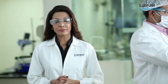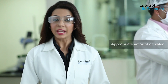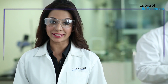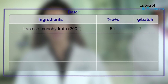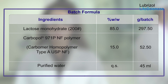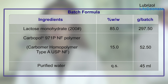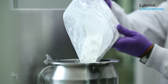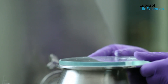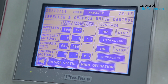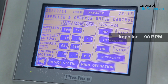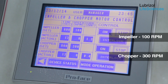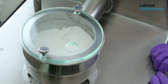In the first example, we will demonstrate an appropriate amount of water addition. The formulation comprises 85% lactose and 15% Carbopol 971P NF polymer. The amount of water used represents 13% of the dry blend, which is an appropriate amount for this formulation. Lactose and Carbopol 971P NF polymer are passed through a 40-mesh screen and loaded into the high shear mixer. The impeller is set at 100 rpm and the chopper at 300 rpm; dry blending is continued for 10 minutes.